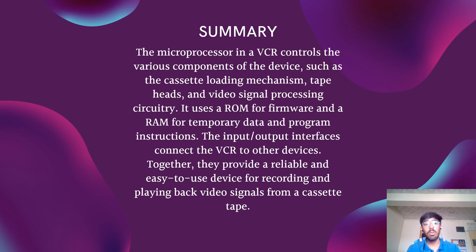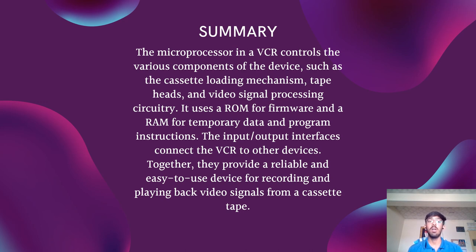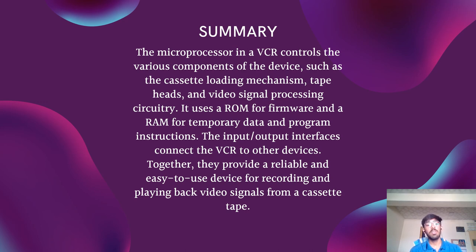In conclusion, a VCR is a device that records and plays back video signals from a cassette tape. The microprocessor and computer organization used in a VCR are responsible for controlling the various mechanical and electronic components of the device, such as the cassette loading mechanism, the tape heads, and the video signal processing circuitry. The microprocessor is typically a low-power, single-chip CPU designed to handle simple input-output operations and basic arithmetic operations. It controls subsystems such as motor control, cassette loading mechanism, and video signal processing circuitry. The computer organization of a VCR typically includes a ROM (read-only memory) containing the firmware or operating system, a RAM (random access memory) that stores temporary data and program instructions, and various input-output interfaces such as serial and parallel ports.